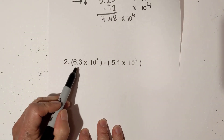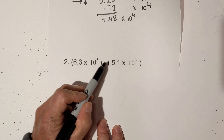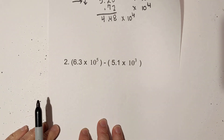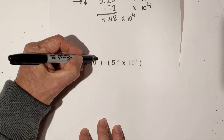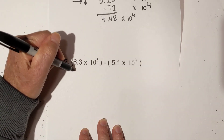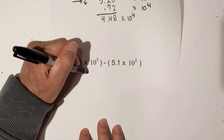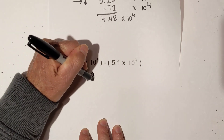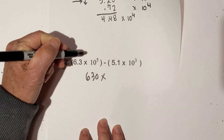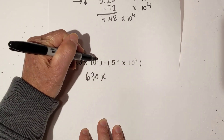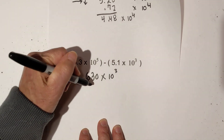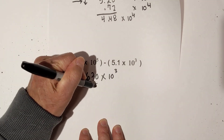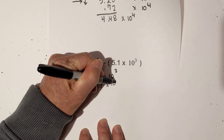I have 6.3 times 10 to the 5th and 5.1 times 10 to the 3rd. I'm going to make this number larger so this exponent will get smaller. I'm going to move it two places to the right so it becomes 630 times 10 to the 3rd, and then this will be 5.1 times 10 to the 3rd.